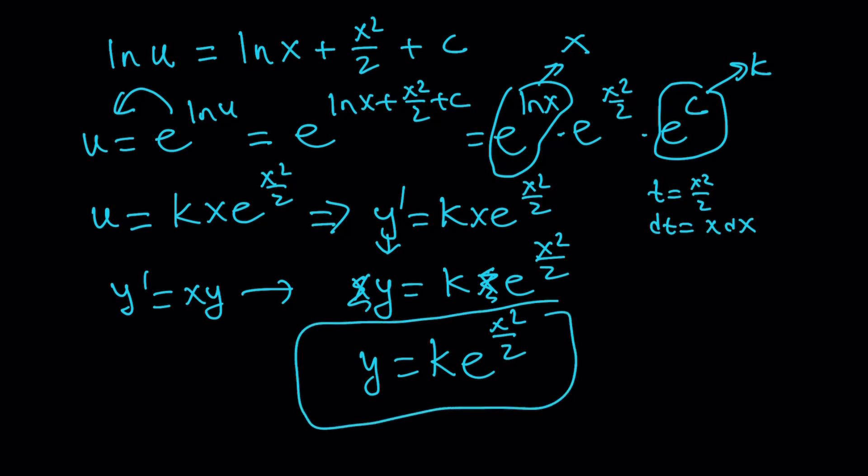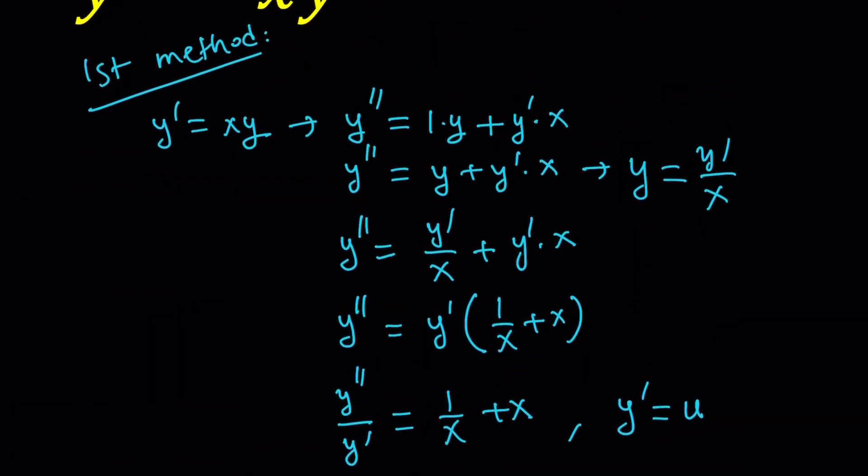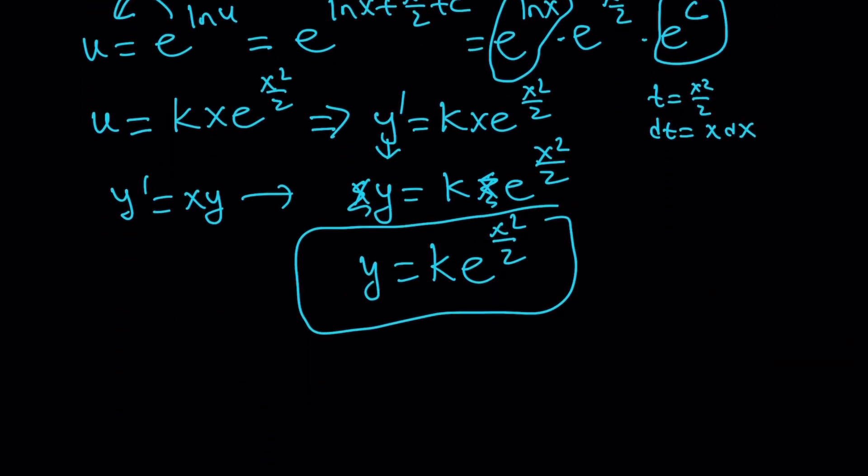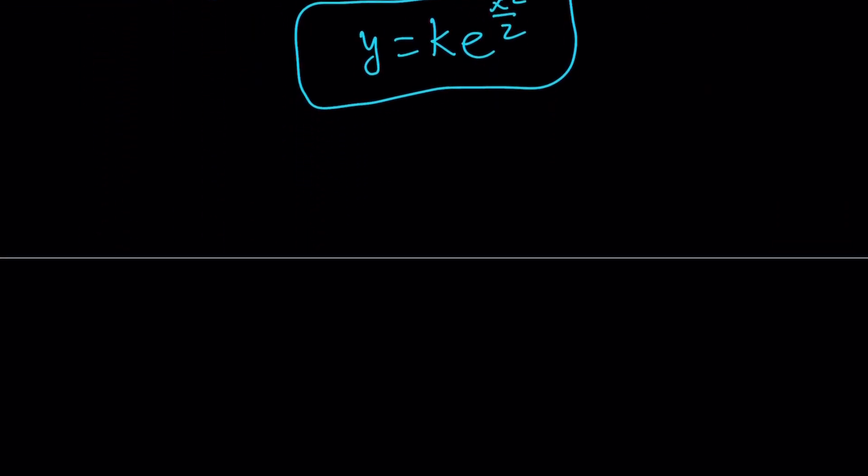Now, are there any other obvious solutions? For example, can y be equal to zero? Absolutely. If you check it out, if y is equal to zero, then y prime is going to be zero. And this is going to work. Okay. Great. Awesome. Let's go ahead and talk about the second method now. And let's see how that works.